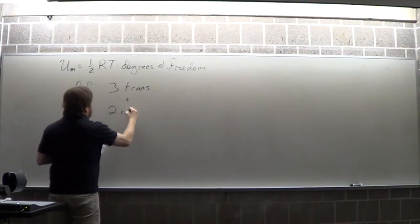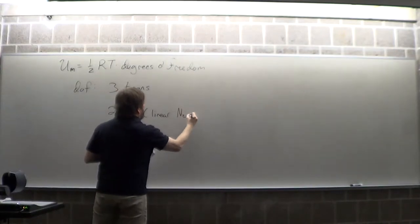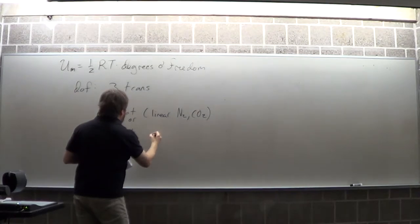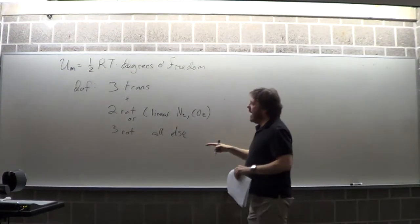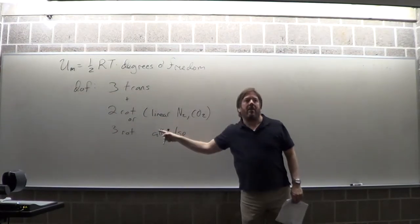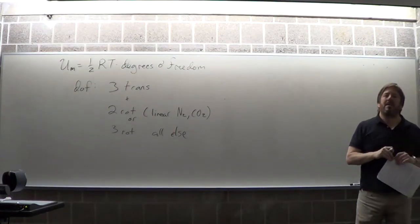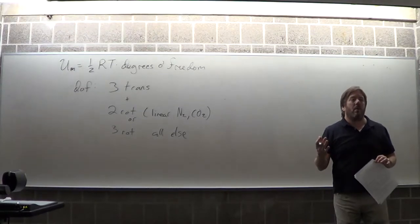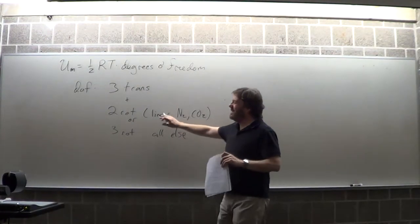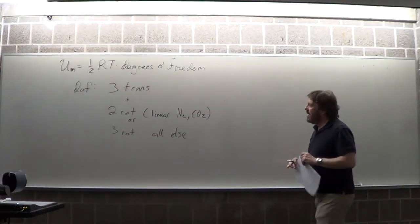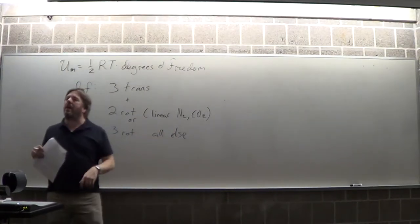Then you can have two rotations for linear molecules like N₂ or CO₂, or three rotations for nonlinear molecules like methane. This is because we live in three dimensions — same reason we have three translations. N₂ and CO₂ therefore have five-halves RT of internal energy, and methane has three RT of internal energy.